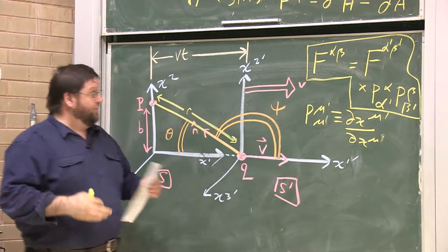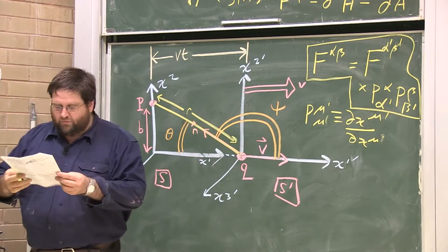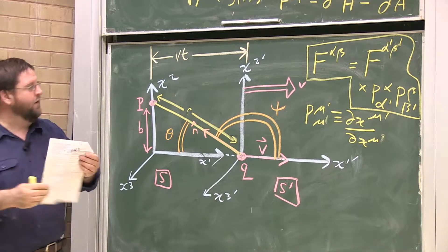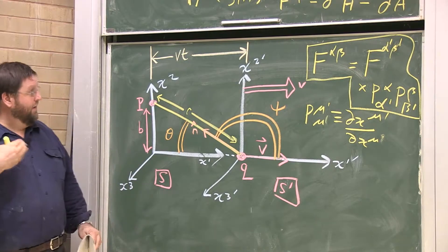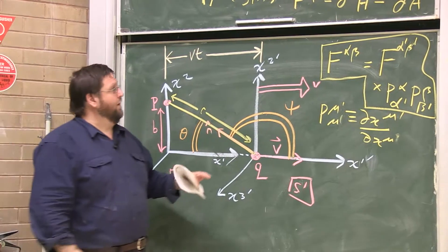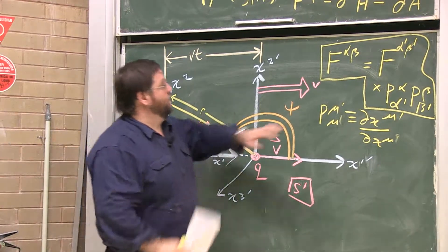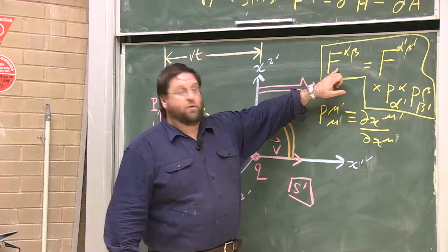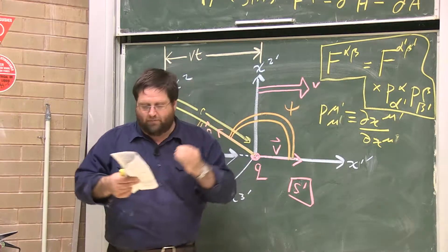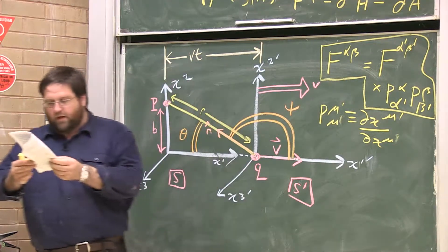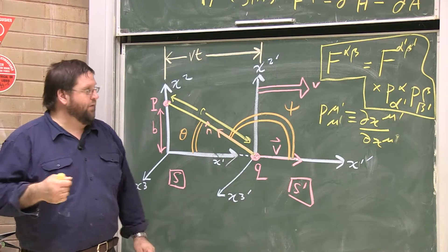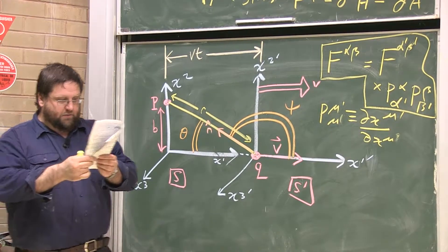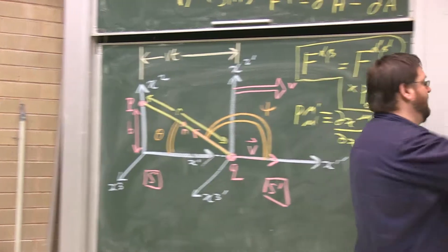If I know how to transform the F's, I'll know how to transform the individual pieces of the electromagnetic field. I'll leave it as an exercise to work out how each component of the electromagnetic field transforms from frame to frame. The result is going to be equations 194, which I'll write down now.